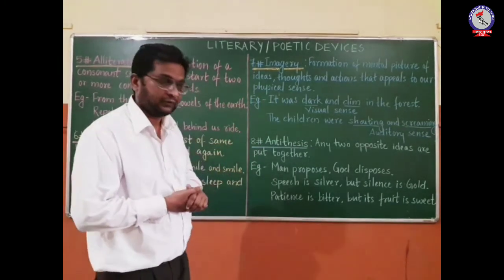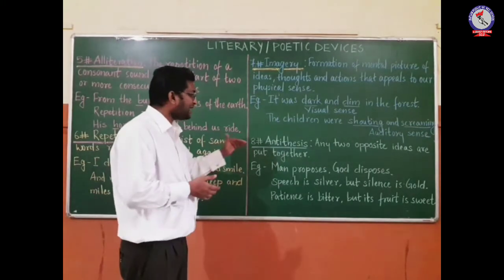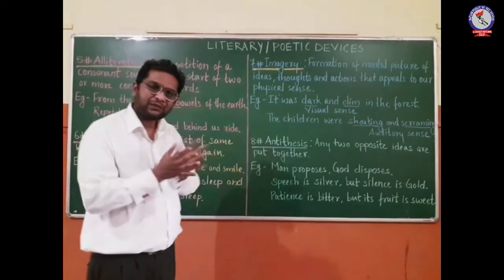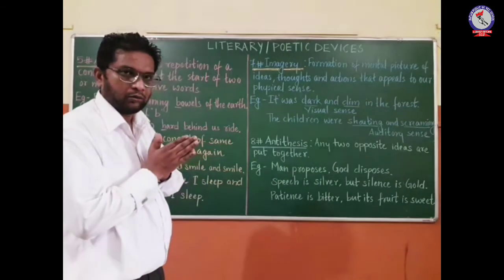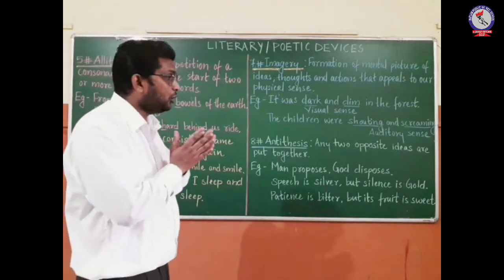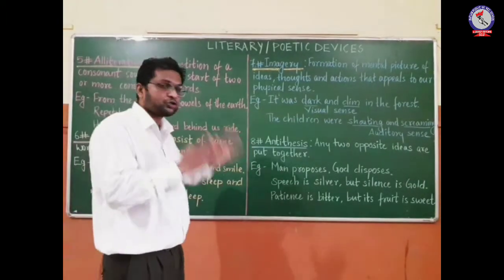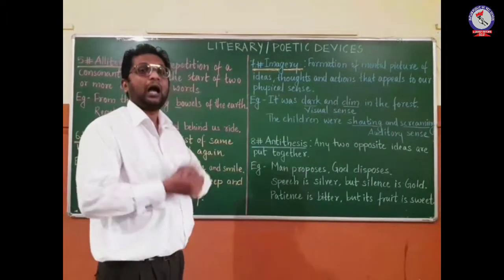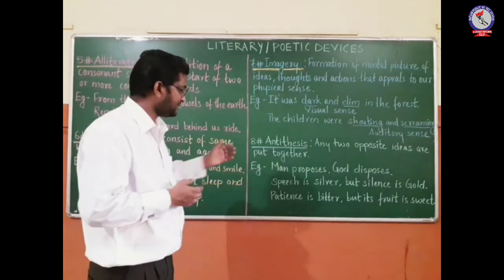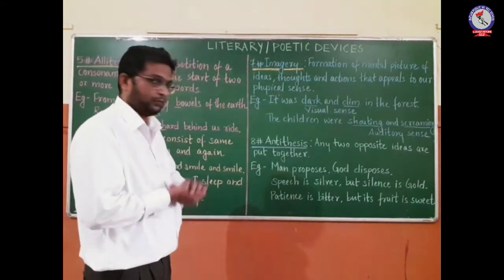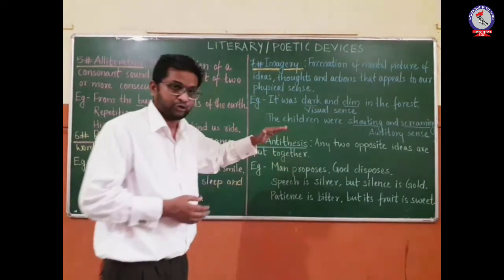The eighth poetic device is antithesis. Antithesis means any two ideas which are opposite or contrary to each other are put together. For example: 'Man proposes, God disposes.' This is the best example of antithesis — 'Man proposes' is the first idea and 'God disposes' is the second. Both ideas are contrary and opposite to each other, yet put in the same sentence.